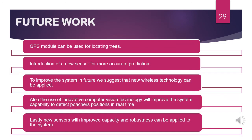Next is the future work of our project. In future, we can use a GPS module for the exact location of trees where illegal activities are occurring or where fire has caught. We can introduce new sensors for more accurate prediction. We suggest new wireless technology can be applied, and also an innovative computer vision technology using artificial intelligence — which is emerging as a global immersive technology — to improve the system's capability to detect poachers' positions in real time and help officials catch them. New sensors with improved capacity and robustness can also be applied.